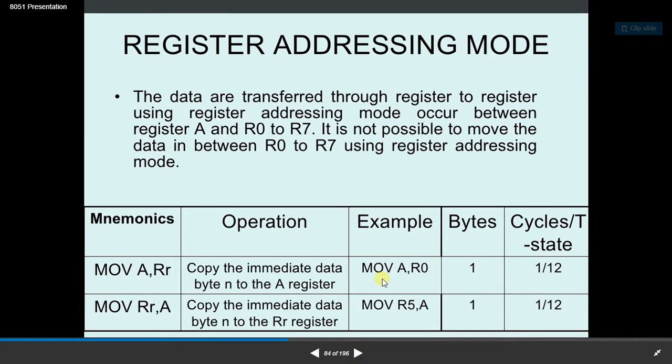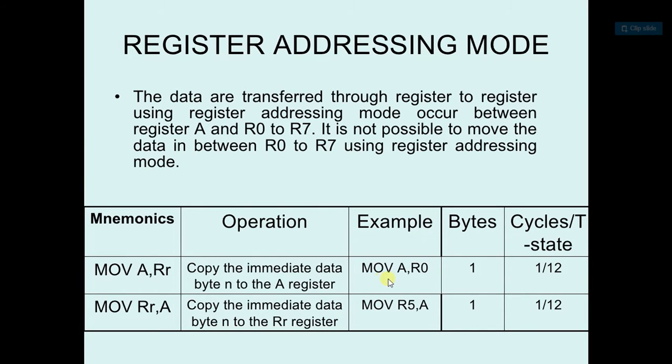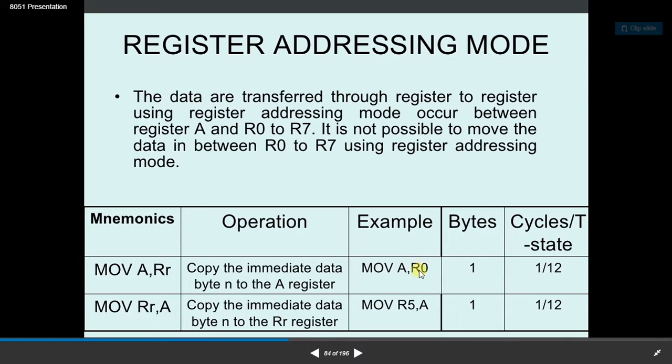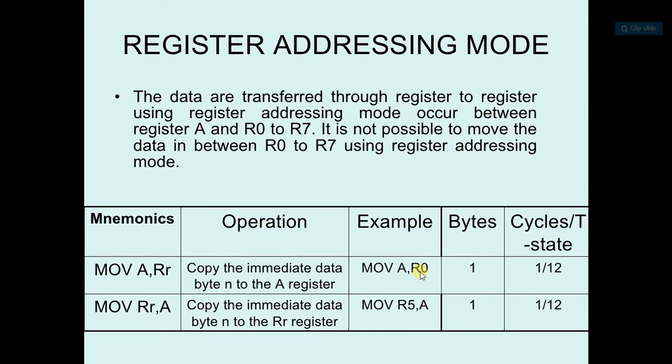Now this is the example MOV A,R0. R0 is the register where the data is stored. So we have to fetch that data from R0 and copy this data to A.